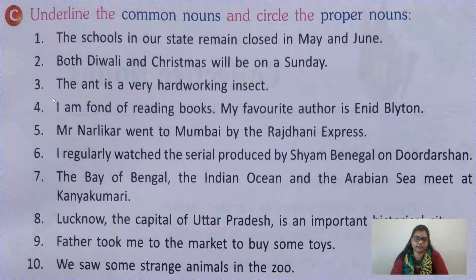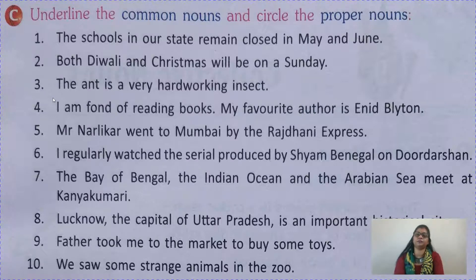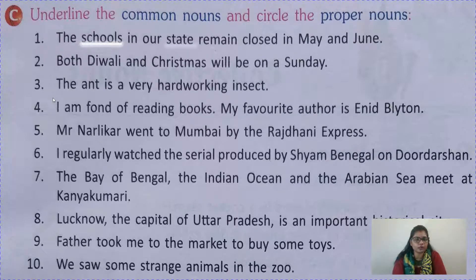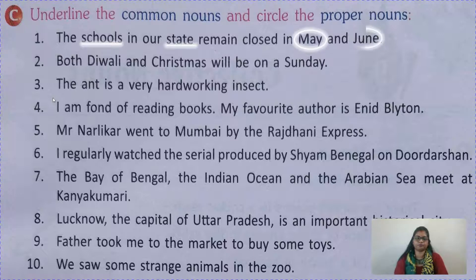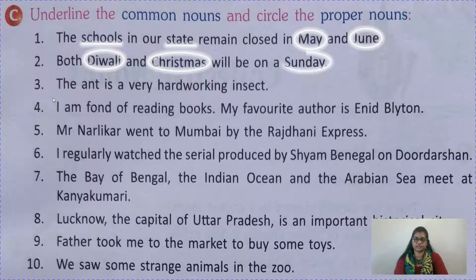Now let us do the exercise. Underline the common nouns and circle the proper nouns. First sentence: 'The schools in a state remain closed in May and June.' When I say 'schools' and 'state,' there are so many schools in states — those are common nouns. But 'May' and 'June' are names of particular months of the year, so you will circle them. Second sentence: 'Both Diwali and Christmas will be on Sunday.' Diwali and Christmas are names of particular festivals, and Sunday is a particular day — so all three are circled as proper nouns.